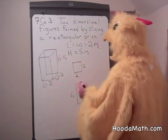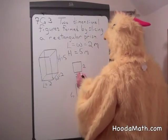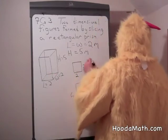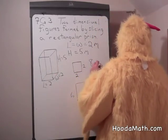The top and the bottom, since they're the same, two times two is four, so that's four square meters. There's two of them, so that would be eight square meters.